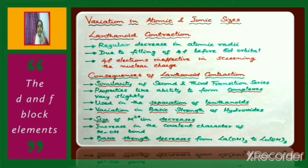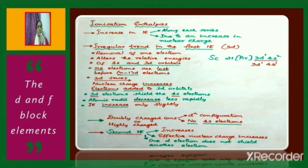There is also a variation in the basic strength of hydroxides of lanthanoids. The size of the lanthanoid ion, that is the M³⁺ ion, decreases as we move from lanthanum to lutetium, leading to an increase in the covalent character of the M–OH bond in the hydroxide.